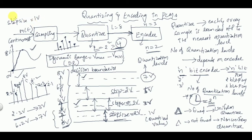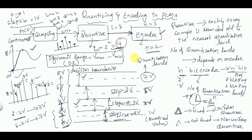With a 3-bit encoder, the levels go from 0 to 1, 1 to 2, 2 to 3, 3 to 4, 4 to 5, 5 to 6, 6 to 7, and 7 to 8 — totally 8 levels with a step size of 1 volt. So the number of quantization levels and step size depend purely on the encoder. A 2-bit encoder gives a higher step size; a 3-bit encoder gives a step size of 1 volt, which is lower.